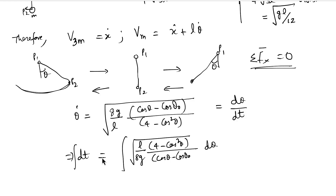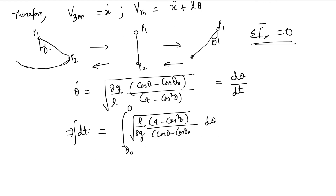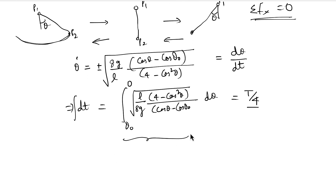Integrating from theta zero to negative theta zero gives t by 2 for a half oscillation, or we can take t by 4 for a quarter period. This is a very complicated integral and I leave it to you to compute. Let me know in the comments, or in another post I will try to solve this integral.